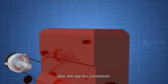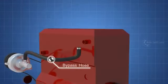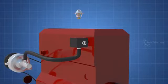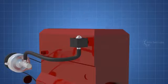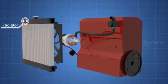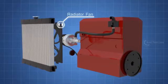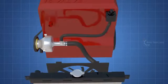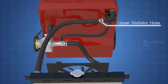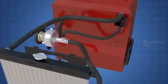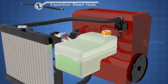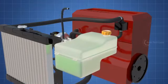Now let's see the connections. The thermostat bypass hose. The thermostat housing. Inside, the thermostat. The radiator and the radiator fan. The lower radiator hose. The water pump outlet hose. The upper radiator hose. The coolant expansion tank. The expansion bleed hose. Coolant overflow hose.